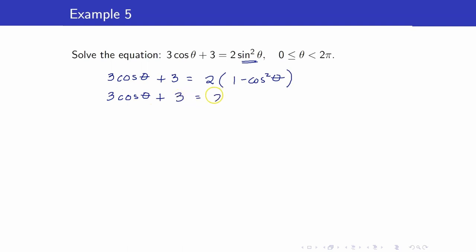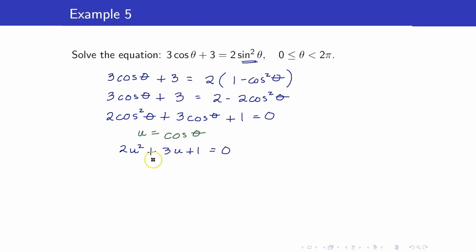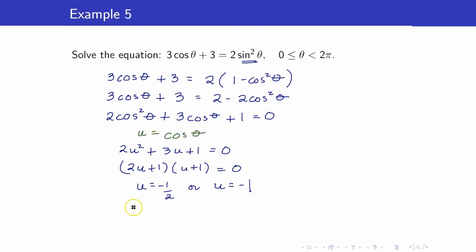Distributing the 2, we have 2 minus 2 cosine squared theta. Now we have one trigonometric function only — cosine of theta — and this is quadratic in form because we have cosine squared theta and cosine theta. Putting everything on one side so that one side equals 0, we get 3 minus 2 equals 1. This is quadratic in form, so we let u equal cosine theta. This becomes 2u squared plus 3u plus 1 is equal to 0.